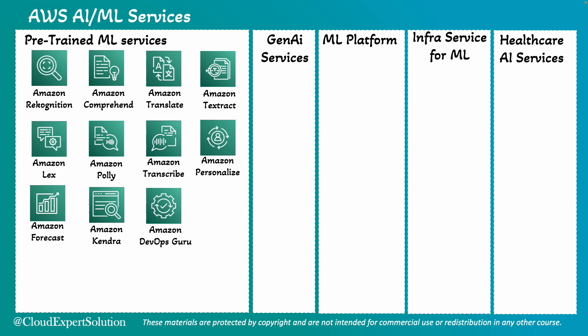Amazon DevOps Guru can improve application operational performance using machine learning. An IT operations team can use Amazon DevOps Guru to detect and resolve operational issues before they impact users. Amazon CodeGuru can automate code reviews and application performance recommendations. A software development team can use Amazon CodeGuru to improve code quality and optimize application performance.